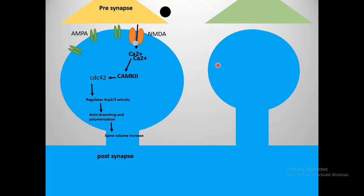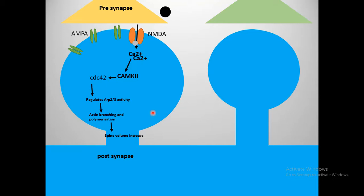High-frequency stimulus, and downstream calcium and CaMKII signaling, not only changes the functional properties and transmission efficiency of the synapse but also increases synaptic volume. Scientists found that another small Rho GTPase — Cdc42 — is restricted to the dendritic spine, and CaMKII can phosphorylate Cdc42. Cdc42 is known to regulate Arp2/3 activity, and thus regulate actin branching and polymerization, which can ultimately lead to an increase in spine volume. This explains how LTP gives rise to both functional and structural changes at the level of the synapse.